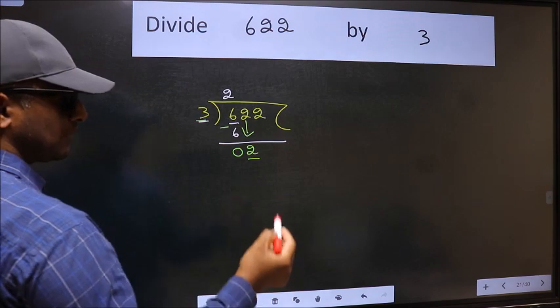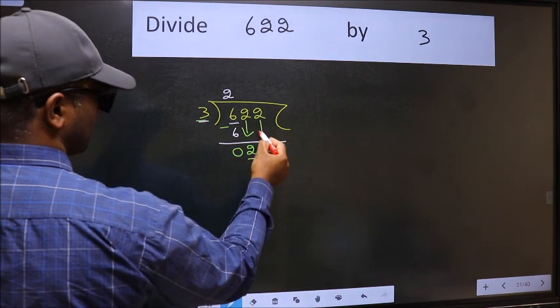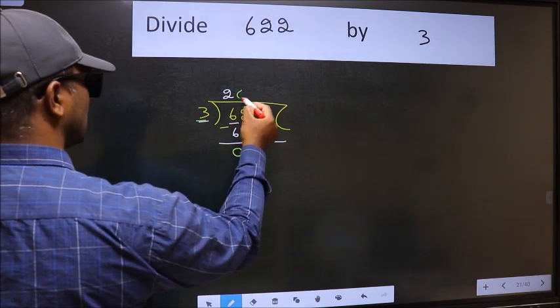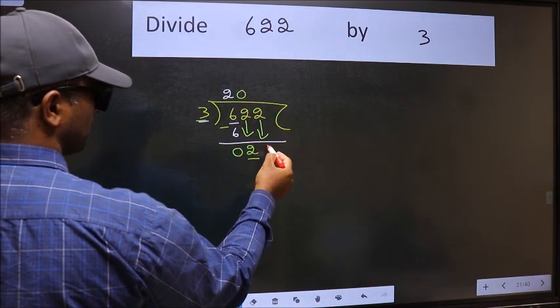So we should bring down the second number. And the rule to bring down the second number is we should put 0 here. Then only we can bring down this number.